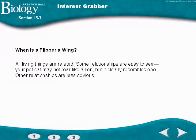The first thing the interest grabber covers is how related living things can show that they had a common ancestor, and that they are related by their DNA as we know now. For instance, your cat kind of looks like a lion and they are related — they're part of the same type of animal.